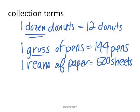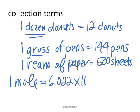It wouldn't be very useful to sell sheets of paper by the dozen. A collection term for chemistry would be the mole, and as we will see, that is equal to 6.022 times 10 to the 23rd particles.